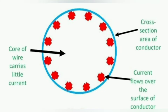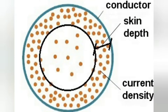Due to skin effect, the effective area of cross-section of the conductor through which current flows is reduced, and the resistance of the conductor is increased when carrying an alternating current. That crowding of current near the conductor surface is skin effect.